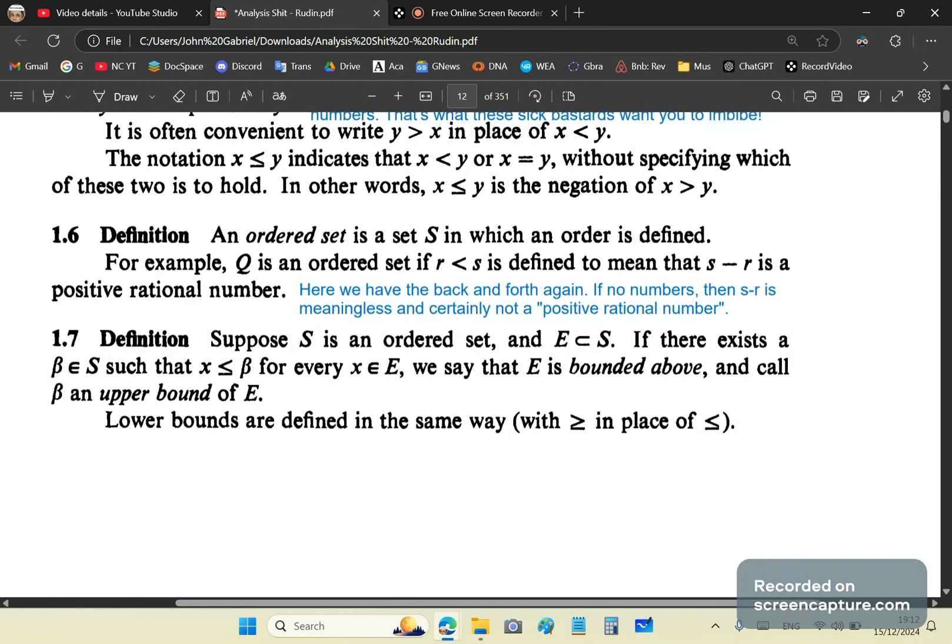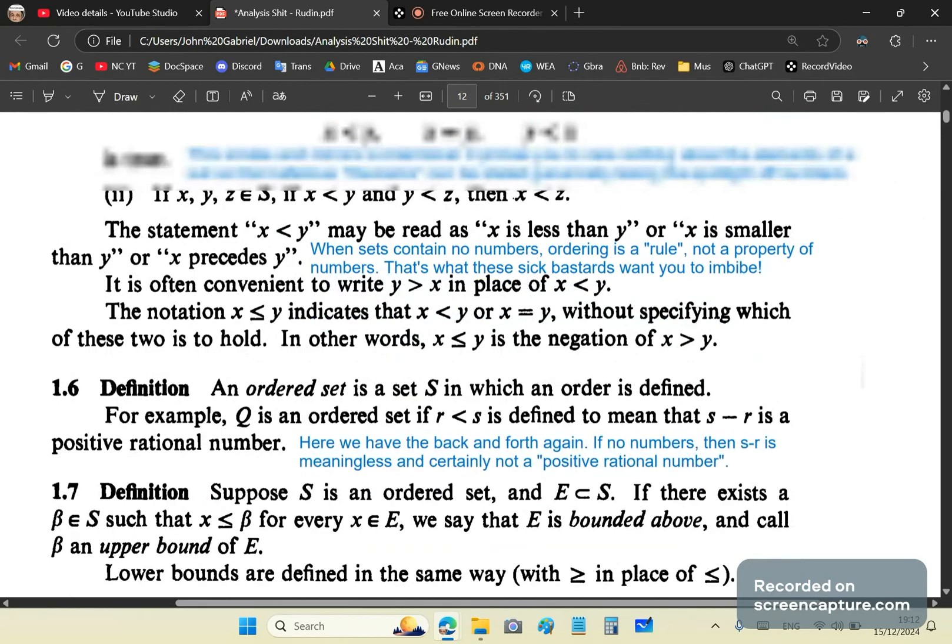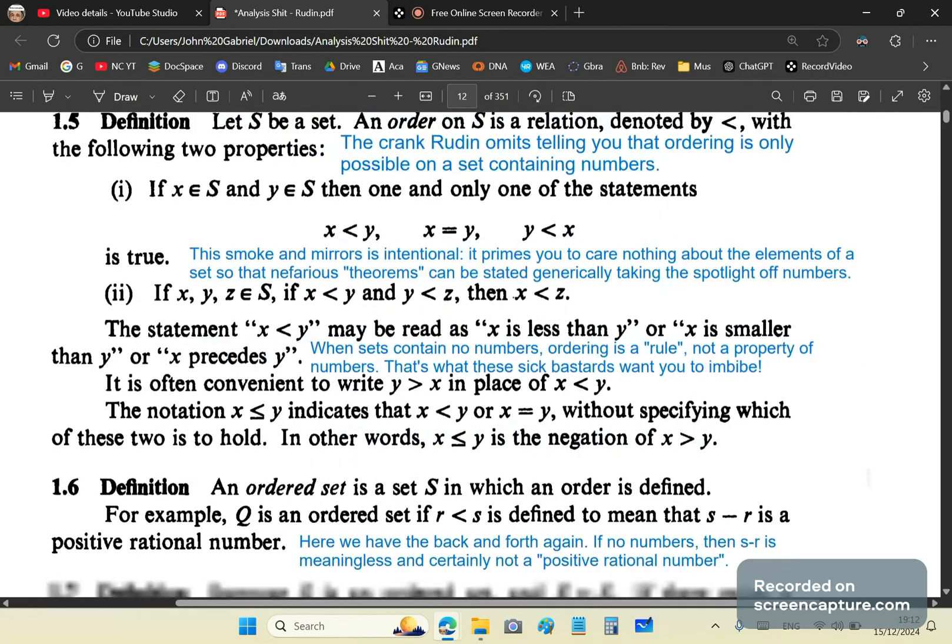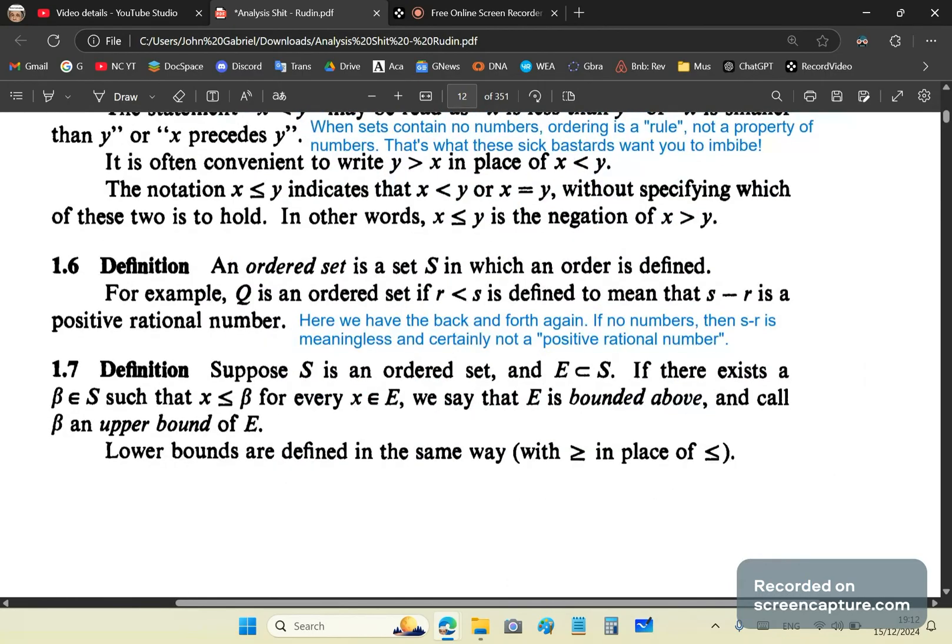So the next definition says that an ordered set is a set as in which an order is defined. Well, this is kind of funny because it's the same as this definition because an order can be defined, like I mentioned earlier with cat, dog and bird. And then it says, for example, Q is an ordered set if R is less than S. And you can't have less than unless it's numbers or you apply a particular rule. And then that's defined to mean that S minus R is a positive rational number. So how do you get S minus R is a positive rational number if you've got cat, bird and dog? So again, here we have the back and forth. It's going from elements, sets to numbers. It's all scatterbrained.